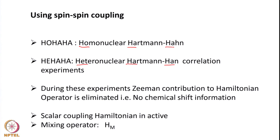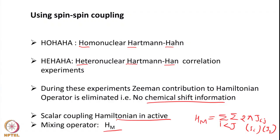To achieve polarization transfer via these experiments, we have to remove the Zeeman contribution — removing the B0 and chemical shift evolution — while keeping the scalar coupling Hamiltonian active. The scalar coupling can then act as a mixing operator. This is given by the mixing Hamiltonian H_M = Σ_IJ 2J_{IJ} · I·J. So with two spins — say A spin and X spin — the scalar coupling is active even if we remove the Zeeman contribution, and that helps in mixing of polarization transfer between the two nuclei.